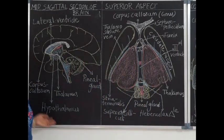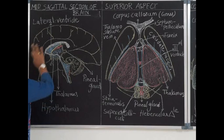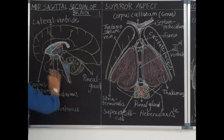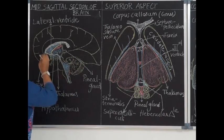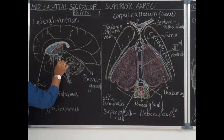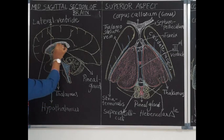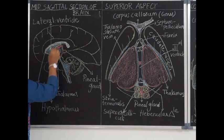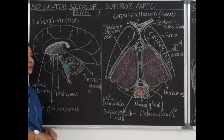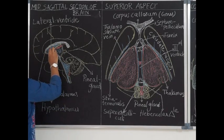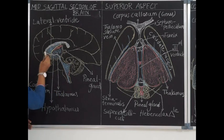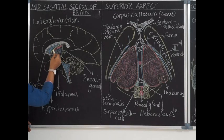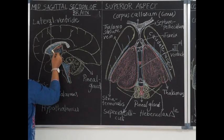To see the diencephalon, this is the mid-sagittal section of the brain showing the cerebrum and below the brainstem and cerebellum. Diencephalon is the continuation of midbrain above and it is located below the lateral ventricle. The cavity of the cerebrum is called the lateral ventricle, bounded anteriorly and above by corpus callosum, and below the lateral ventricle this part is called as diencephalon.